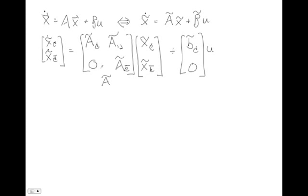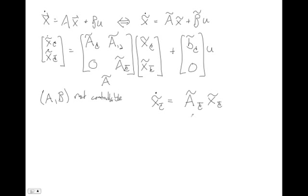Within this system, if we were to ask: is the pair (A, B) controllable? We would find the answer is no. The reason why is because we have this little subsystem that lives within our system — the not-controllable states equal some A_nc times the not-controllable states. My input completely doesn't affect it. Maybe it's stable, and maybe it's not stable — it all depends on the eigenvalues of this little not-controllable A matrix. There's nothing I can do to affect those eigenvalues; they are what they are.